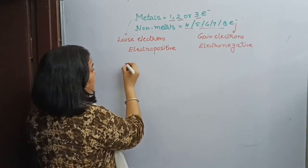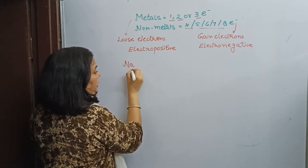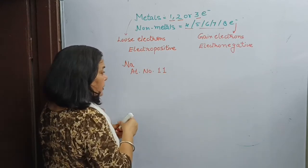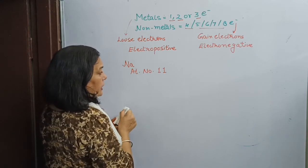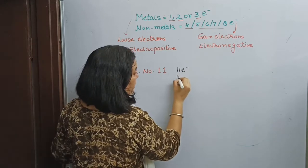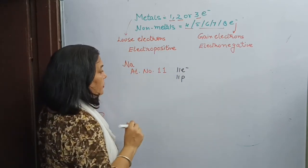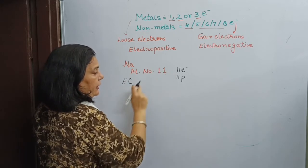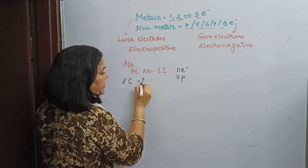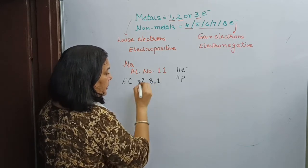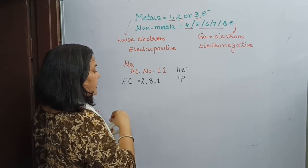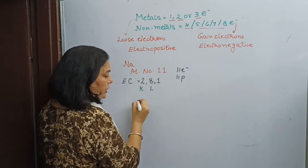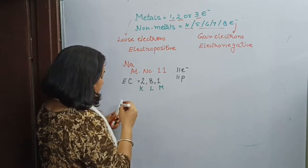For example, the first element is sodium. Its atomic number is 11, which means it has 11 electrons and 11 protons in one atom. The electronic configuration of these 11 electrons is 2, 8, and 1. Its first shell, the K shell, has 2 electrons; the L shell has 8 electrons; and the M shell has only 1 electron.